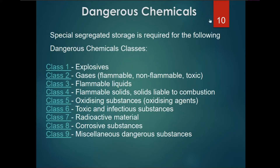There are several classes of dangerous chemicals. Class 1 is explosive. Class 2 gases, which may be flammable, non-flammable, or toxic. Class 3 flammable liquid. Class 4 flammable solids liable to decomposition. Class 5 oxidizing substance. Class 6 includes toxic and infectious substances. Class 7 includes radioactive material. Class 8 includes corrosive substances like acid. And Class 9 is miscellaneous dangerous substances.